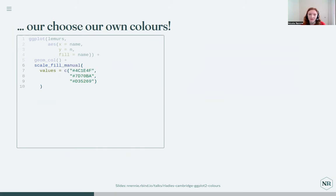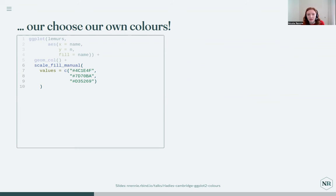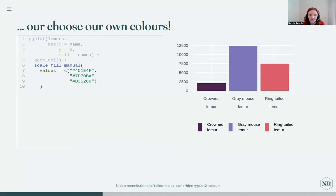Quite often, if you're working for a company with their own color schemes, or writing a thesis and want plots to match a university logo, you probably won't find the exact colors in an existing palette package. What you can do is add your own colors with the scale_manual functions, passing in a vector of colors either as hex codes, RGB values, or named colors.